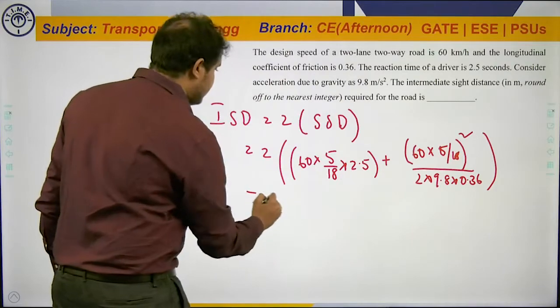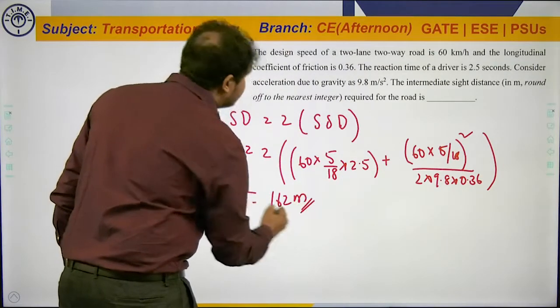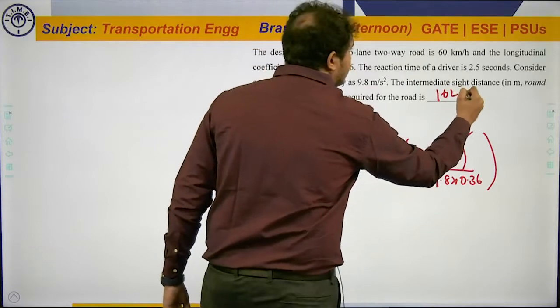On solving this, we get ISD equals 162 meters. Hence, our answer is 162 meters.